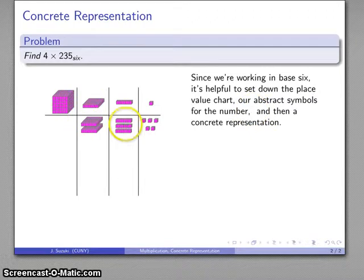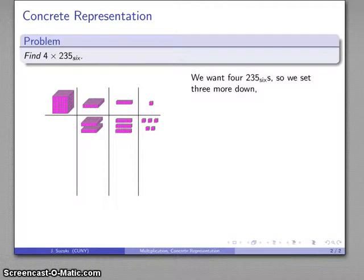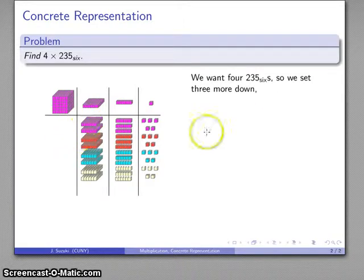There's 2 of these, 3 of these, 5 of these, and there's our number 235 base 6. Now I want 4 of those. I'm taking 4 of these, so I'm just going to set down 3 more. Here's our 1, 2, 3, 4, conveniently color-coded.